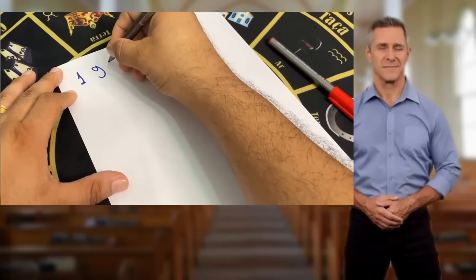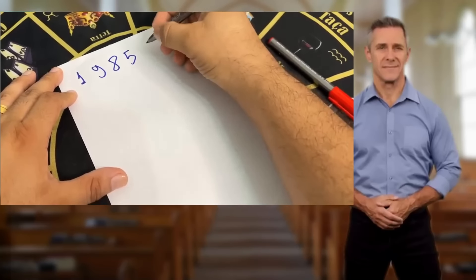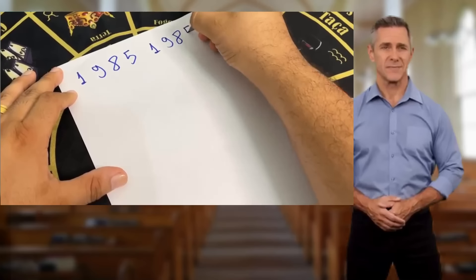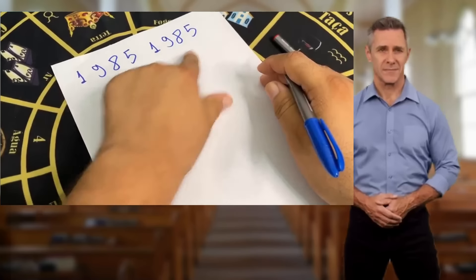First, write your year of birth twice. For example, if your year of birth is 1985, write it like this: 1985, 1985.